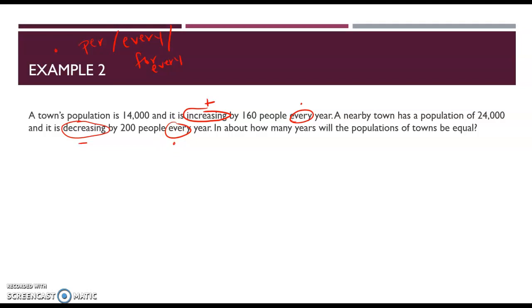So what we're going to do is we're going to start with the first town. I know the first town, town A, is 14,000 plus, because we're increasing, 160 people every year. And so I'm going to use T for year.